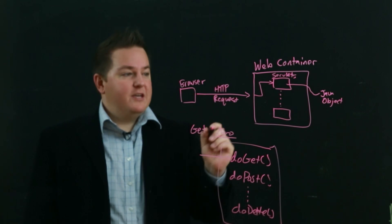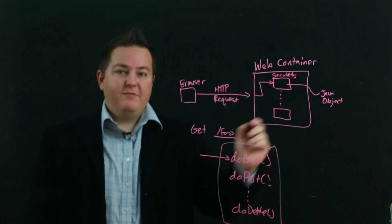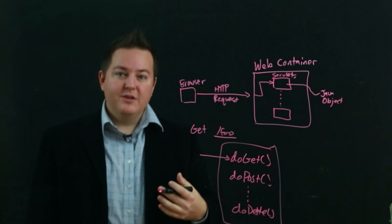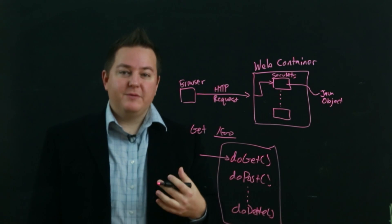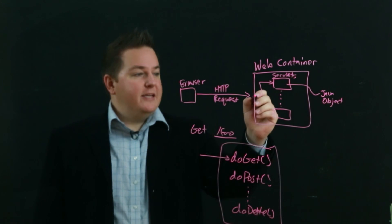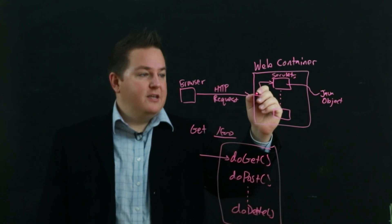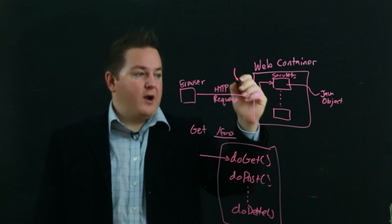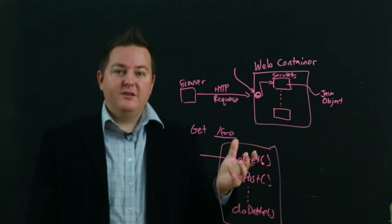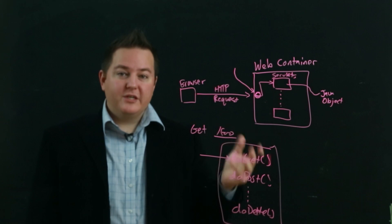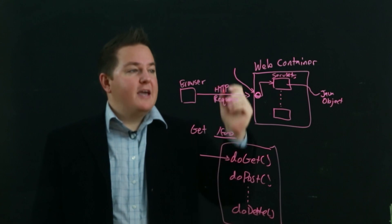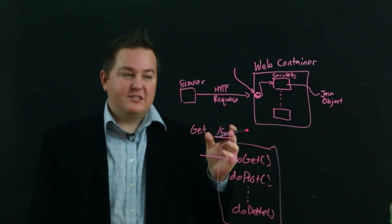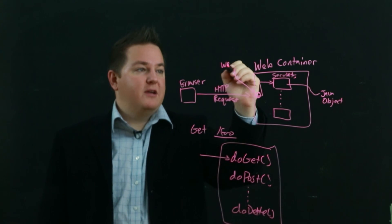Now one of the key questions is: if we have multiple servlets, how do we decide which servlet should handle a particular HTTP request? Well, inside most web containers there's a routing function — some router — which decides, based on the request coming in, which servlet should handle it. In Java, the way that servlet handling and routing is specified is through a web.xml file.